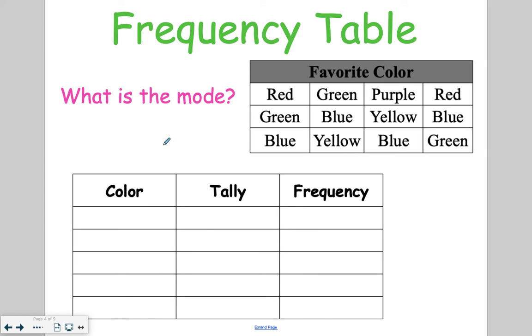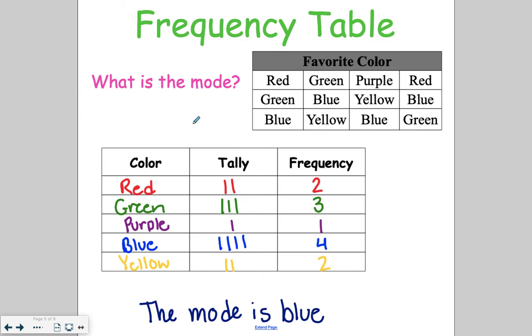Go ahead and try this one on your own, making a frequency table for the colors, which you will have to check momentarily when the answer shows. And then into the box, you're going to type your answer for mode. So we have our table all filled in with our frequencies. And then our mode in this case is going to be blue. That's the one that occurs most frequently.